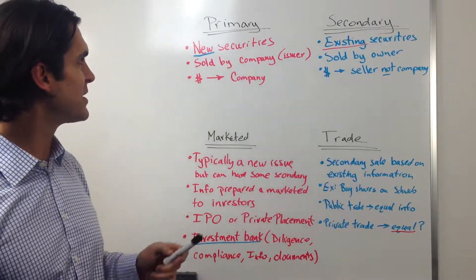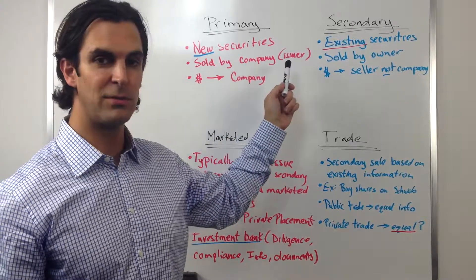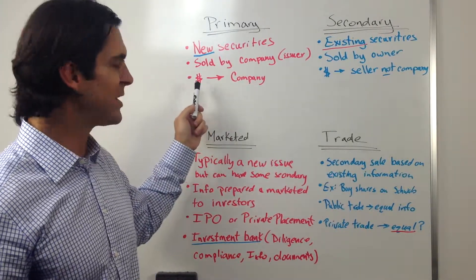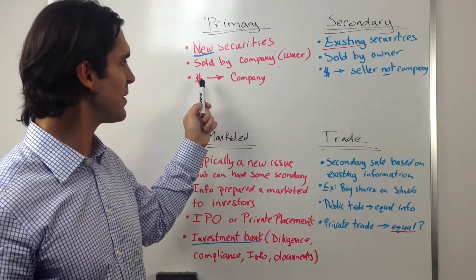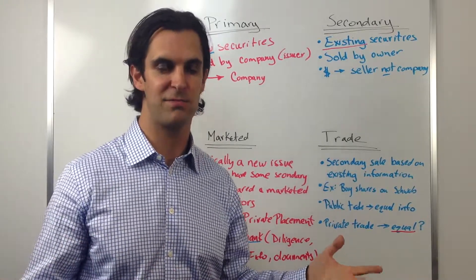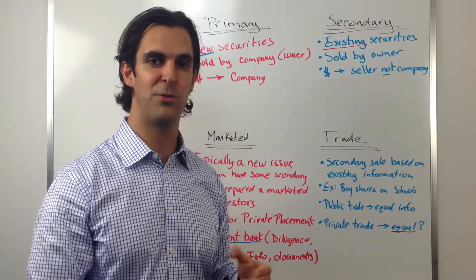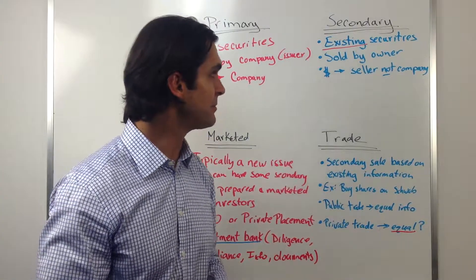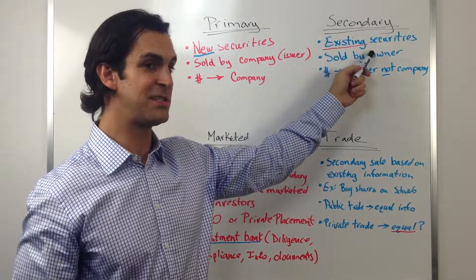Primary issuance of securities would basically be new securities sold by the company, which in this case would be referred to as the issuer of those securities. Because the company is issuing the securities, the cash that's raised goes to the company. So this would be an example if the company wanted to raise 10 or 20 million dollars to build a new production facility — that would be considered a primary issuance.